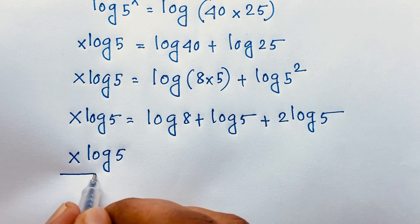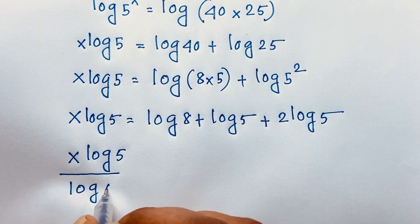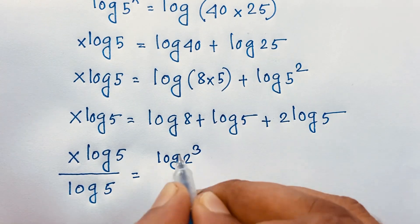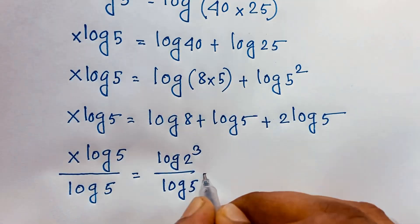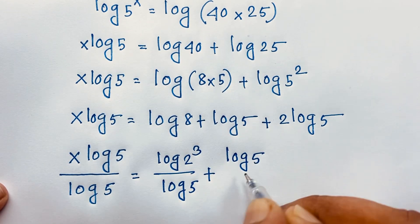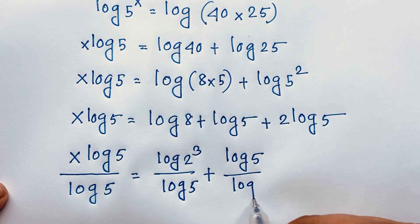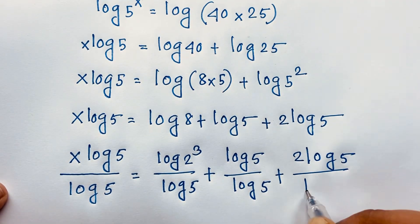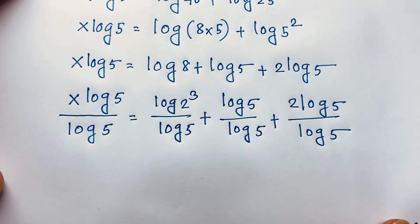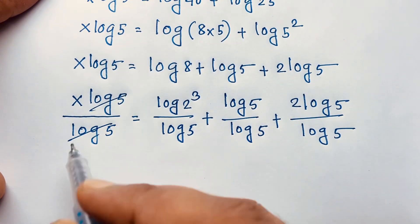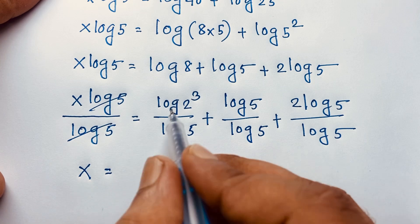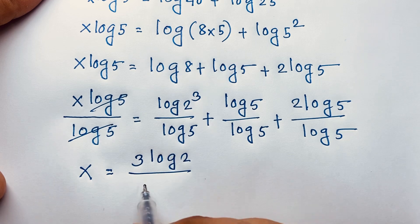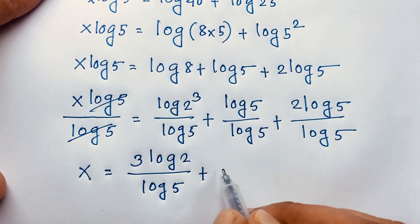I divide both sides by log 5. Log 8 is log 2 to the power 3, so here we have log 5 over log 5. Dividing both sides by log 5, and 2 log 5 over log 5. These cancel out: x times 1 equals 3 log 2 over log 5 plus 2, and then the 2 terms give 1. So these three move together: 3 log 2 over log 5 plus 1, and this divide gives 1, this divide gives 2.